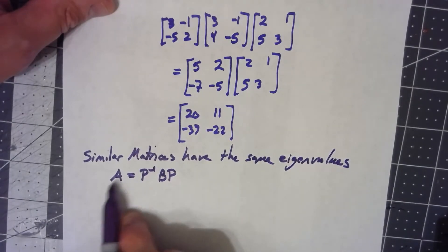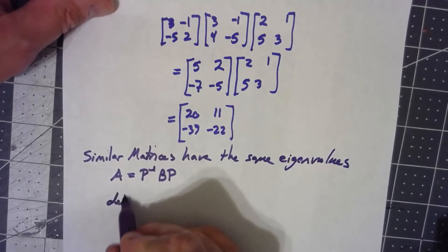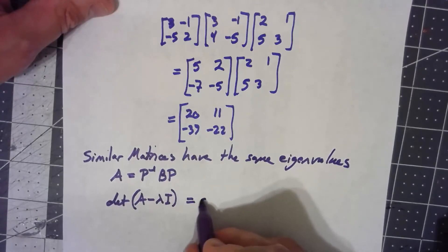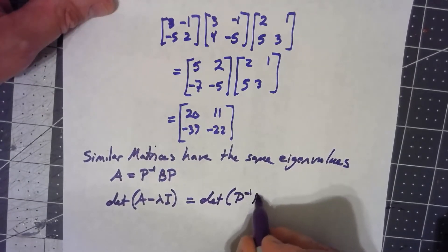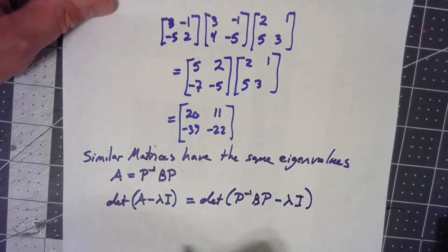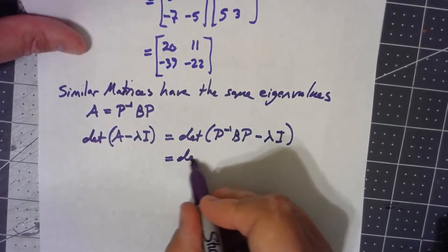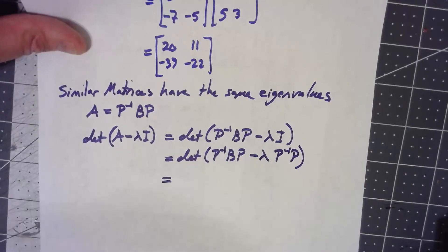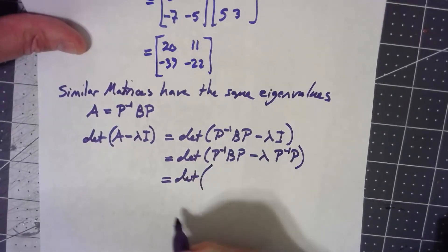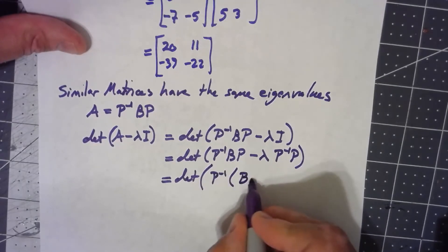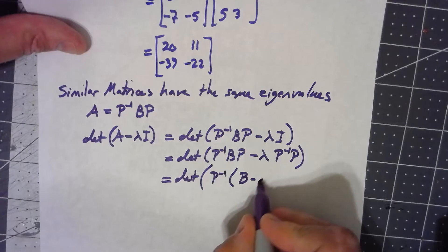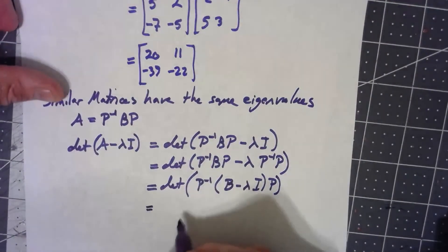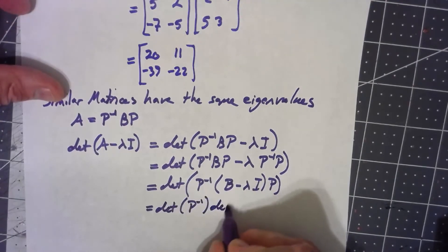To find the eigenvalues of A, we take the determinant of A minus lambda I. That's the same as the determinant of P inverse BP minus lambda I. Now, I equals P inverse P, so we can rewrite this as the determinant of P inverse times (B minus lambda I) times P. And the determinant of a product equals the product of the determinants.